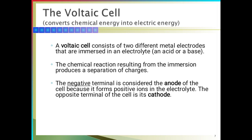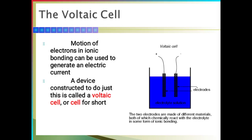Voltaic cell is another name for an electrochemical cell. During the chemical reaction, electrical energy is produced. Here, two electrodes are immersed in electrolyte. The positive terminal is the cathode and the negative terminal is the anode. Chemical reaction will occur through the terminals and electrical energy is produced. This is the diagram for the voltaic cell. The motion of electrons in the ionic bond can be used to generate electrical current. A device constructed to do just this is called a voltaic cell, or simply a cell.